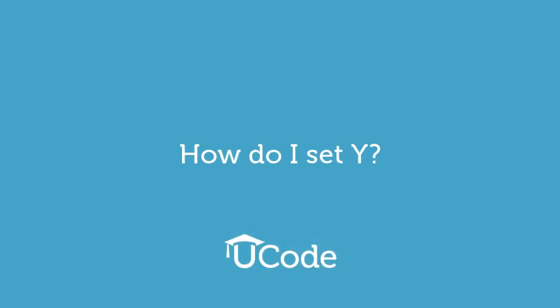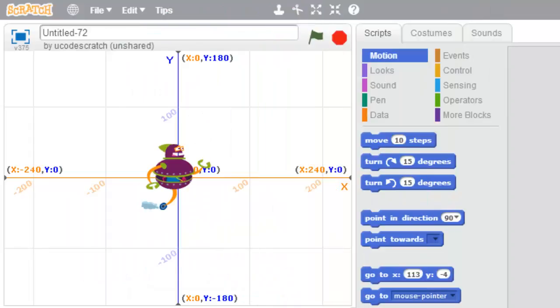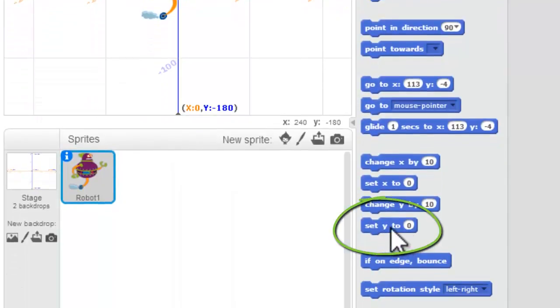How do I set Y? Well, we use the set X block. Now we're going to use, under motion, the set Y to zero block.